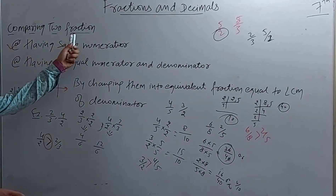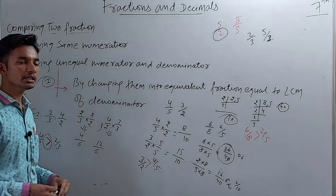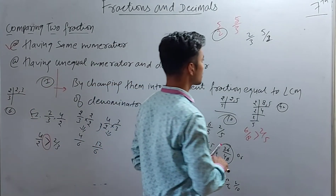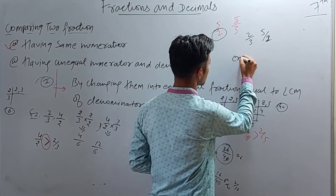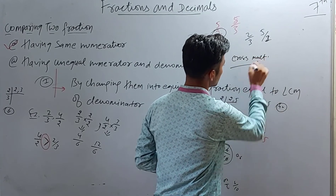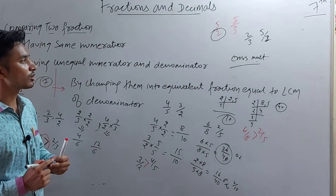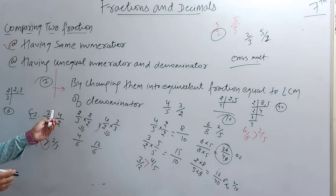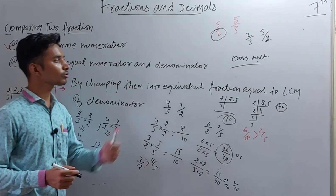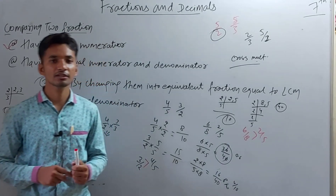So this is all about comparing two fractions — our first method is complete. In the next session, we will study the second method which is cross multiplication. We will compare the two fractions by cross multiplication in the next session. Thank you students.